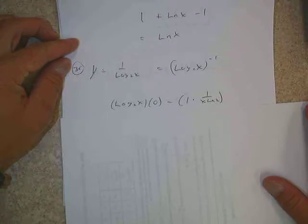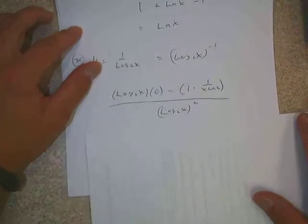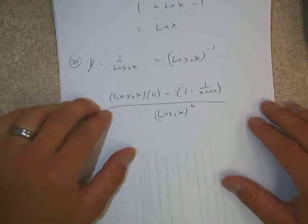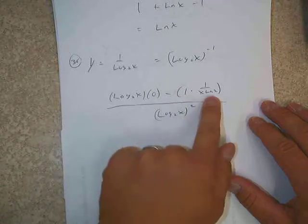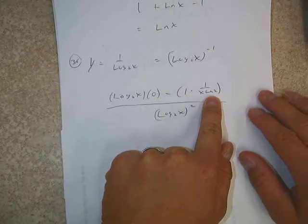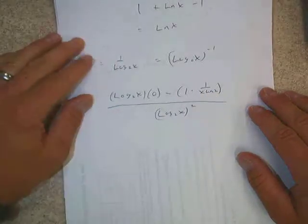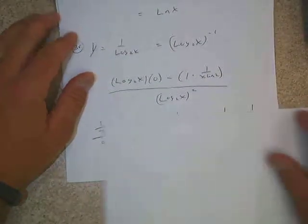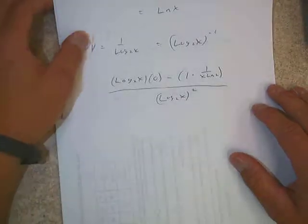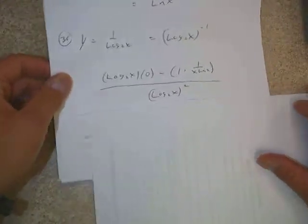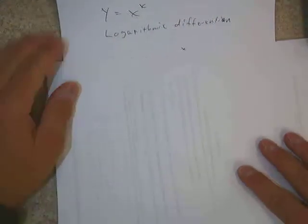For 1 over log base 2 of x, we can use the quotient rule: log base 2 of x times the derivative of the top, minus the top times the derivative of the bottom, all over the denominator squared. The derivative of log base 2 of x uses our logarithm base a rule. The top numerator is 0, so subtracting gives negative 1 over x·ln(2), which simplifies to our final answer.